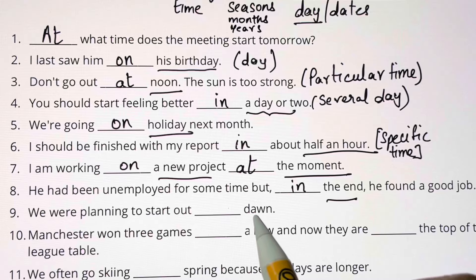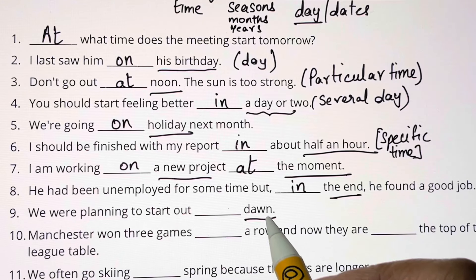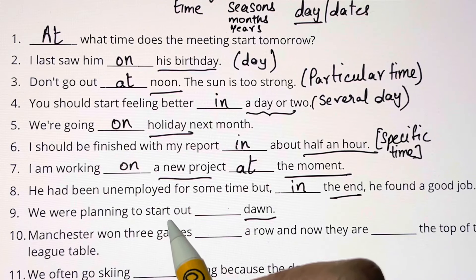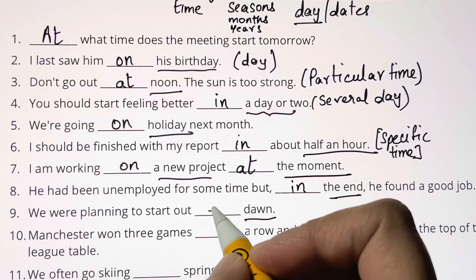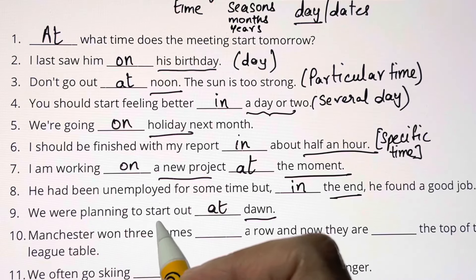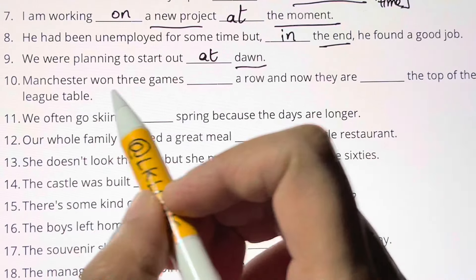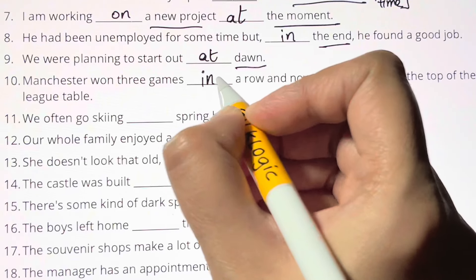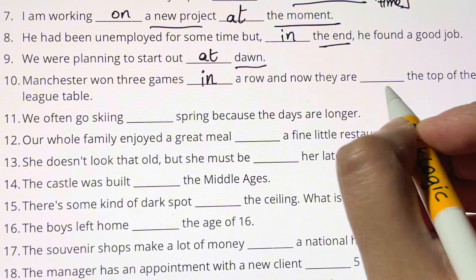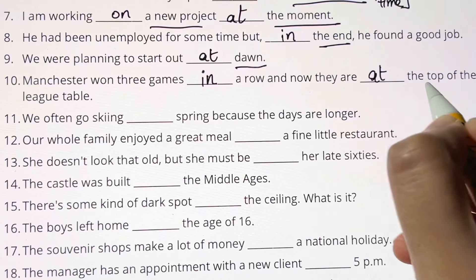We were planning to start out blank dawn. There is a time mentioned — when you're talking about time, you use AT. We are planning to start out AT dawn. Manchester won three games in a row and now they are blank the top of the league table. They are AT the top of the league table.